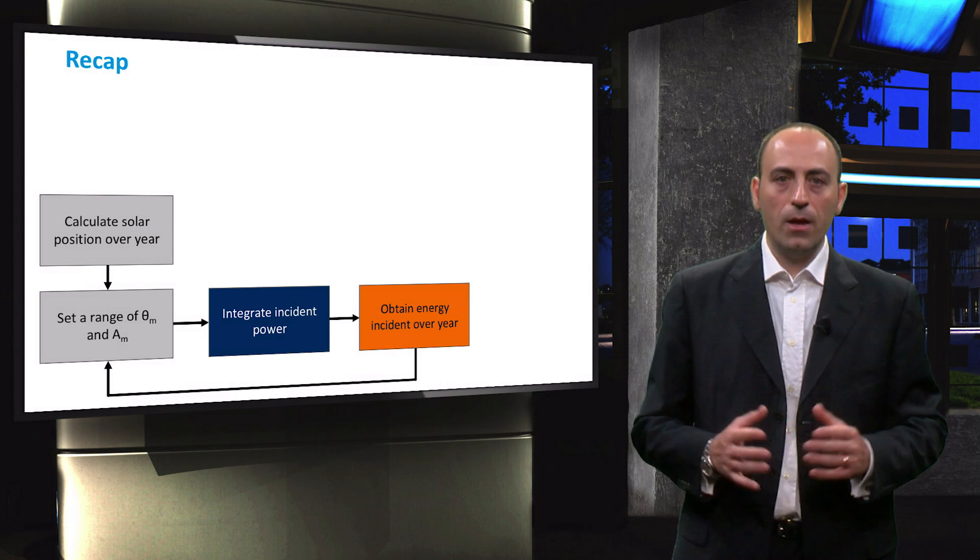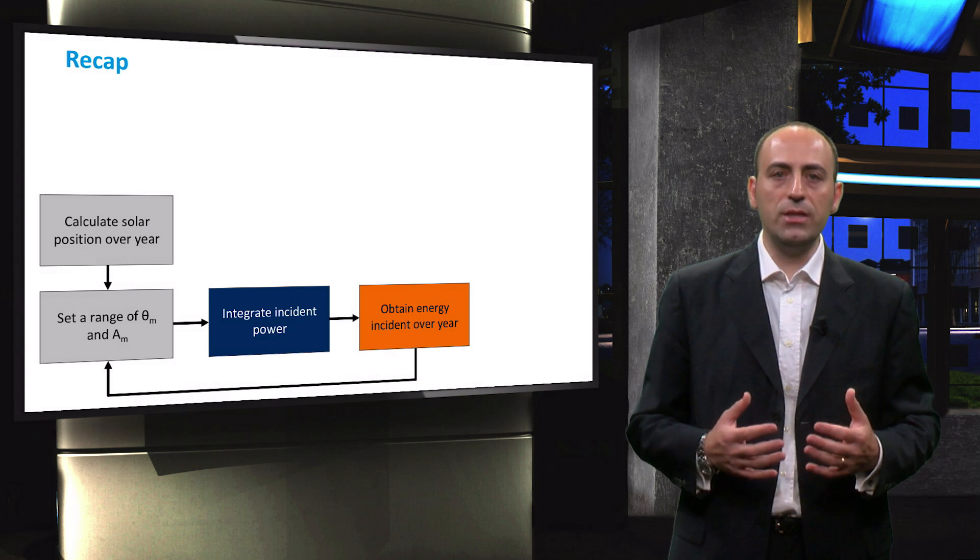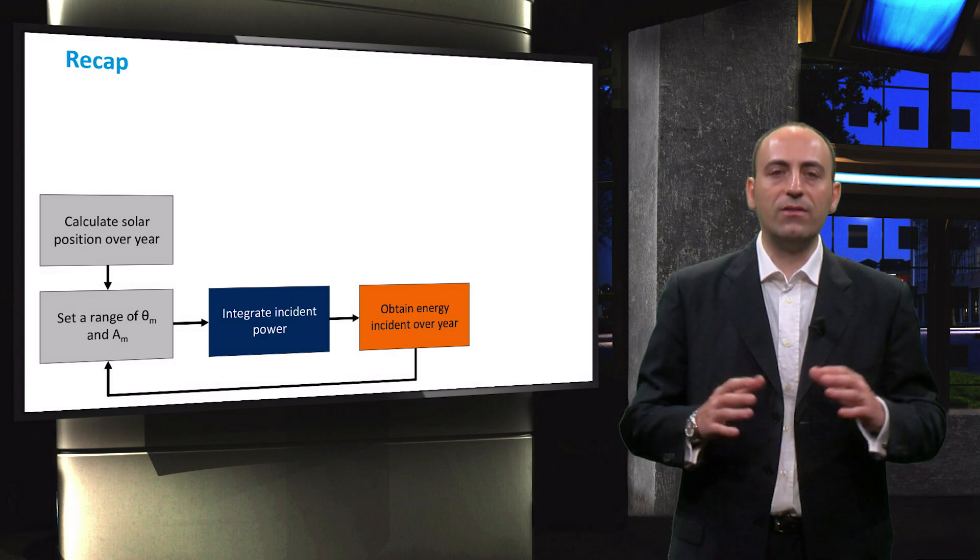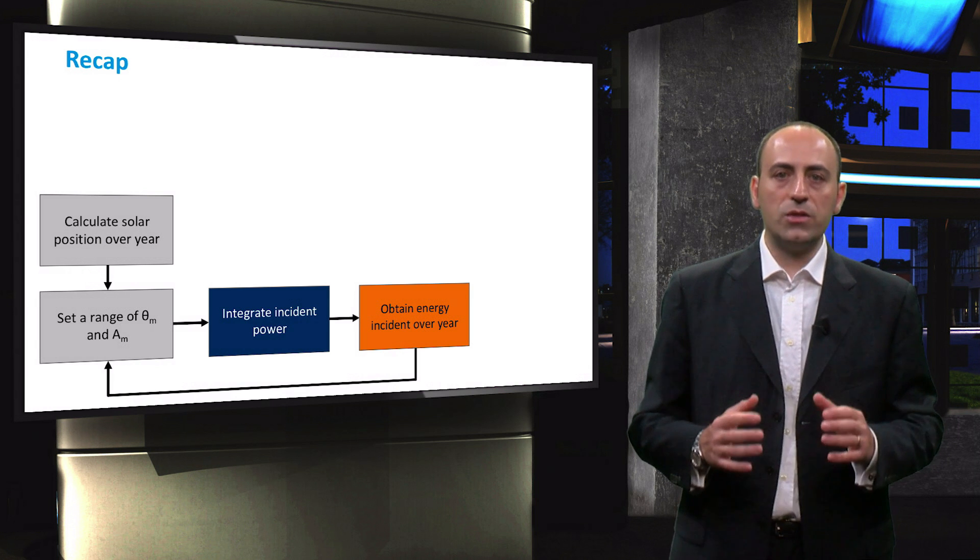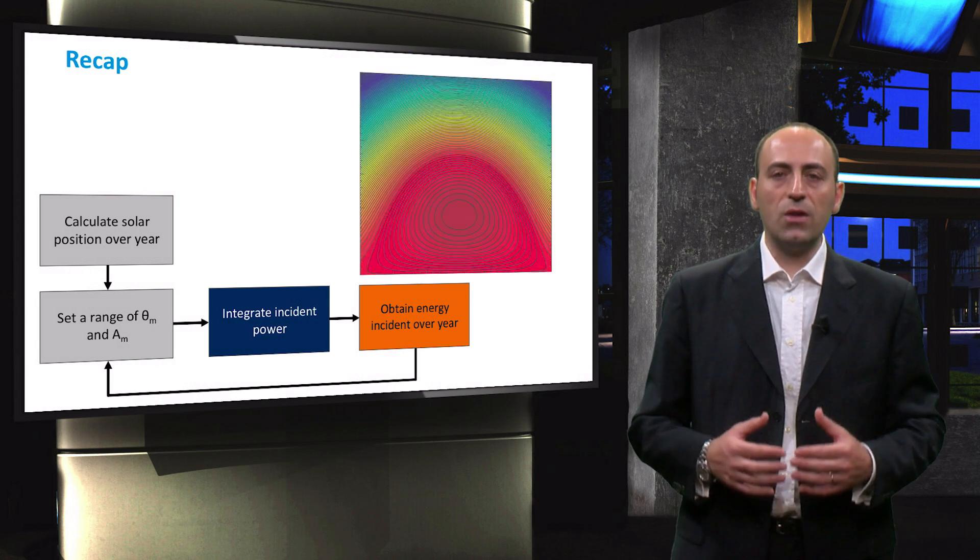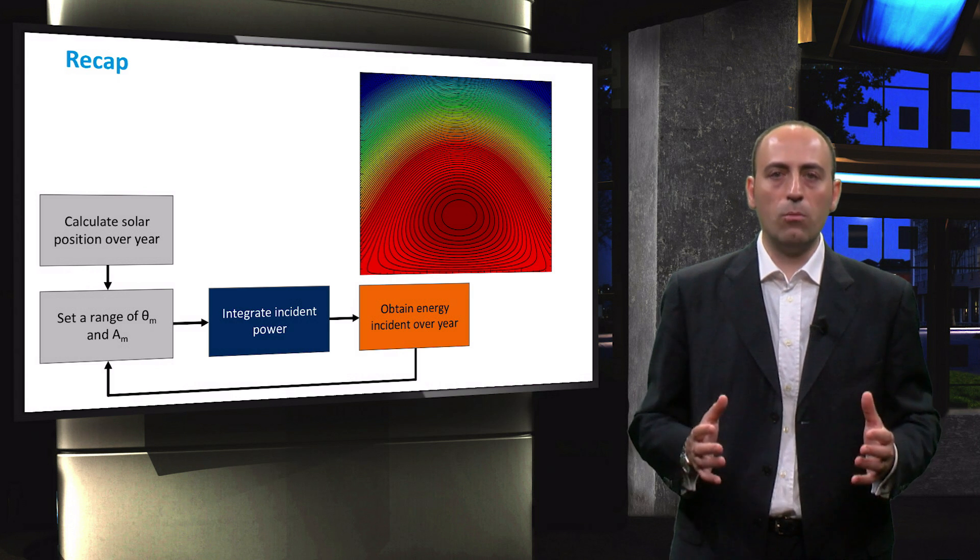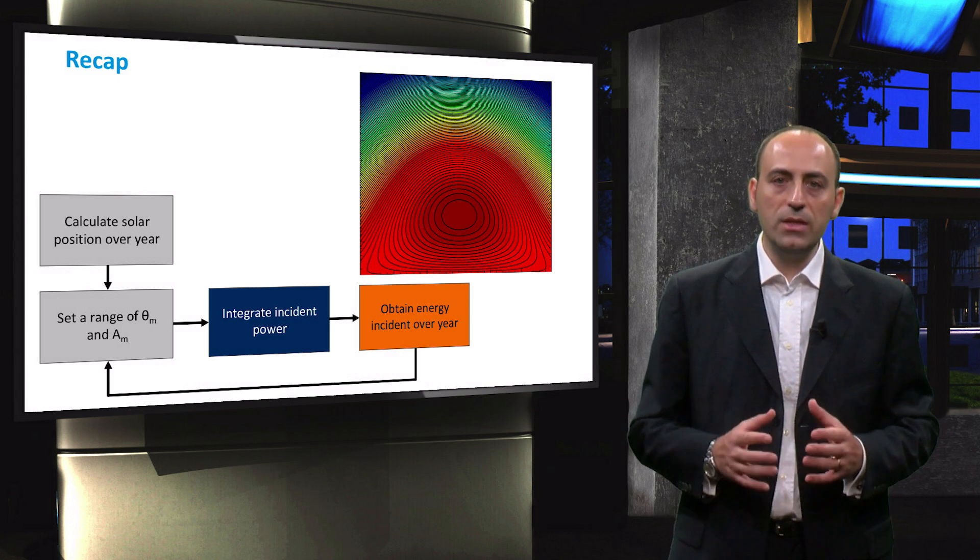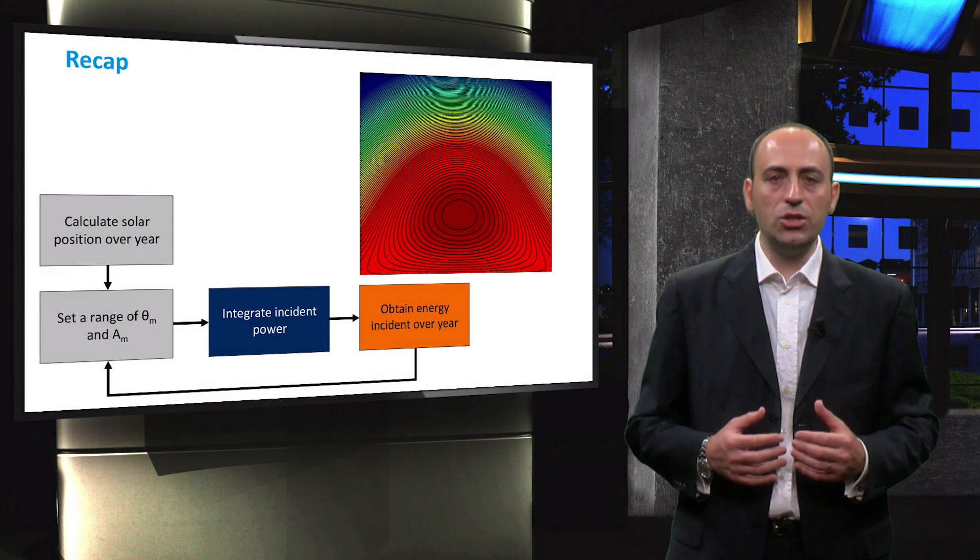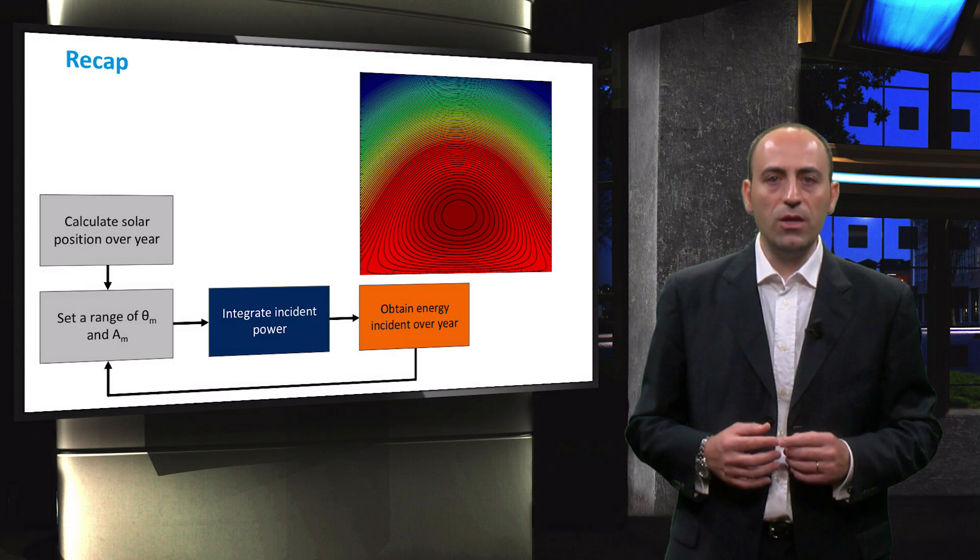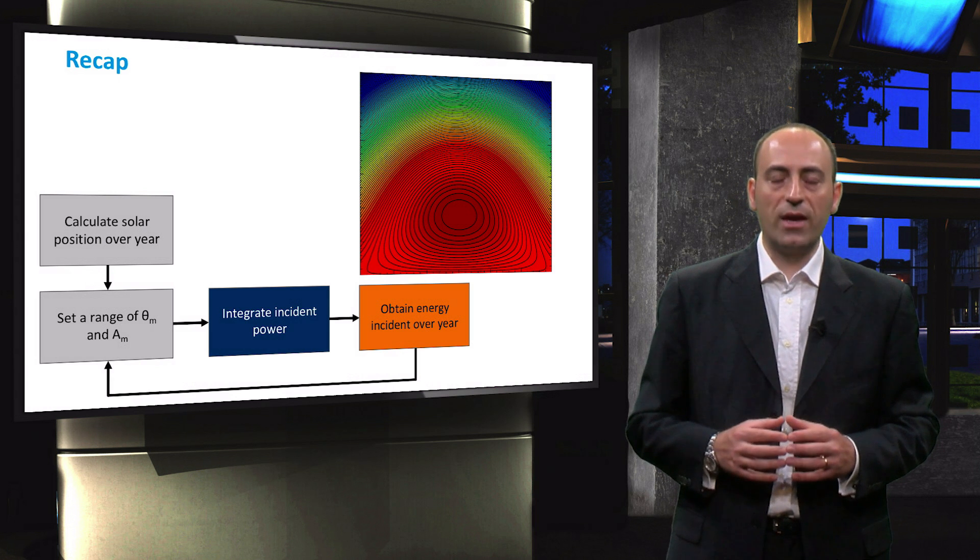Time for a short recap. In this video, we have introduced the flowchart to obtain the energy incident on a PV module over an entire year for a specific set of tilt and azimuth. The result is this contour plot that graphically depicts the yearly energy incident for all possible module orientations. With this tool, we introduced the fixed and adjustable concept for energy optimization. In the next video, we will look at a more advanced technique that is mechanically tracking the sun.